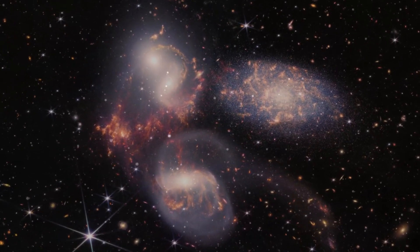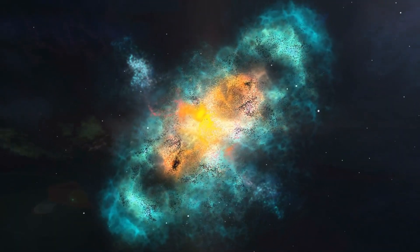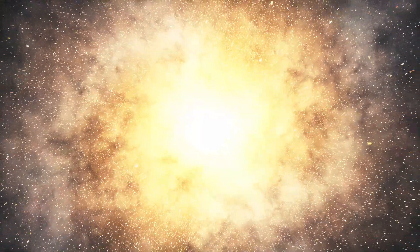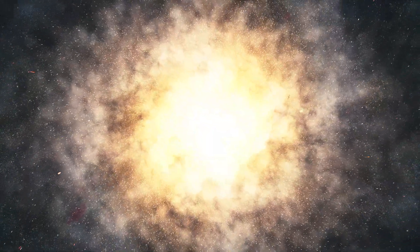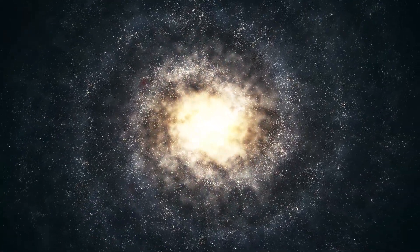Yet, every galaxy dances to its own rhythm. With their majestic arms, spiral galaxies rotate with an angular momentum that eclipses their elliptical counterparts by a factor of five. This discrepancy isn't random, but intricately linked to the marriage between dark and visible matter.